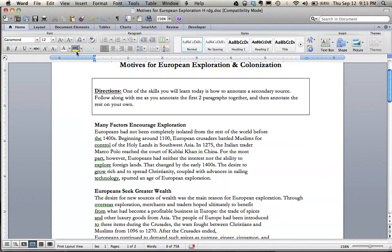So I'm going to use a little highlighter tool, and first as I'm going through, what I'm going to be looking for is primarily the main idea. That's just because I can see there's one paragraph here that I'm going to start on, looking for what is the main idea in that. Okay, so I see: Many factors encourage exploration. Looks like a title. Europeans had not been completely isolated from the rest of the world before the 1400s. Beginning around 1100, European crusaders battled Muslims for control of the Holy Lands in Southwest Asia. In 1275, the Italian trader Marco Polo reached the court of Kublai Khan in China. For the most part, however, Europeans had neither the interest nor the ability to explore foreign lands. That changed by the early 1400s. The desire to grow rich and to spread Christianity, coupled with advances in sailing technology, spurred an age of European exploration.